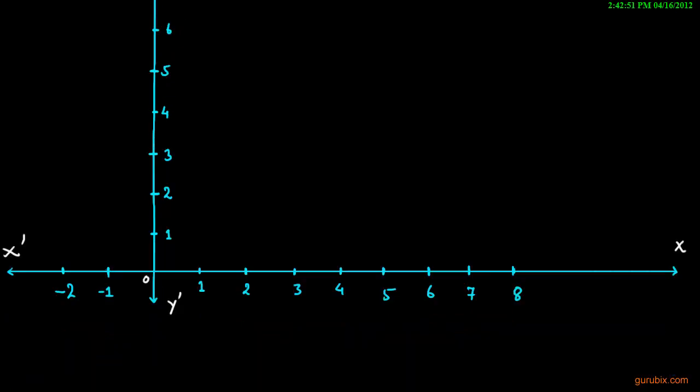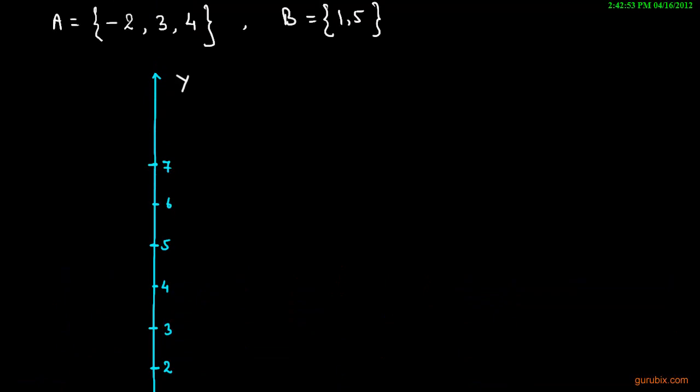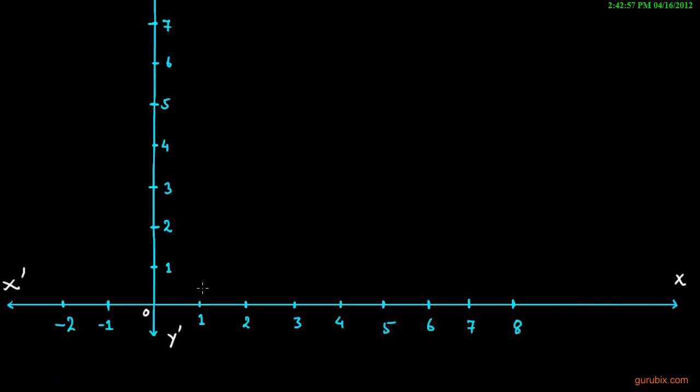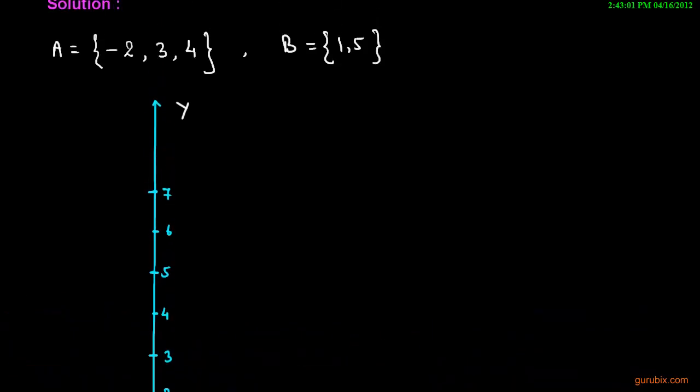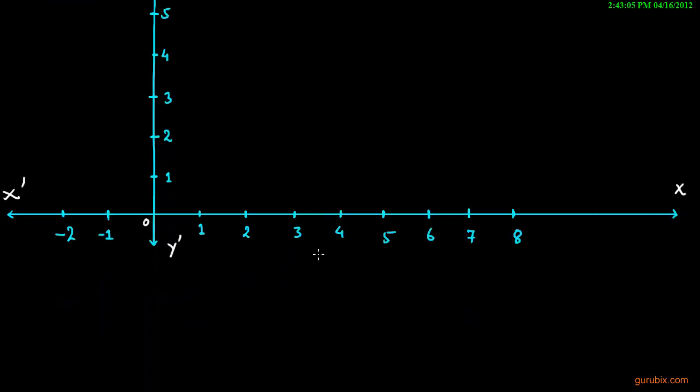Now we shall represent set A on X dash X, on this horizontal line. In set A we have three points: -2, 3, and 4. -2 is here, this is -2, and we shall represent 3 here, this is 3, and this is 4.